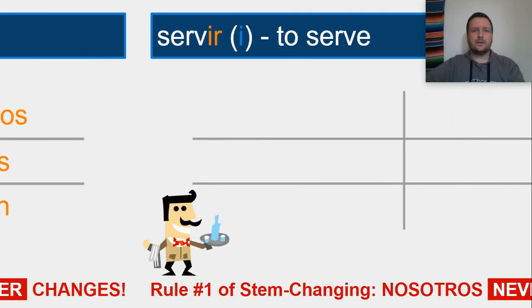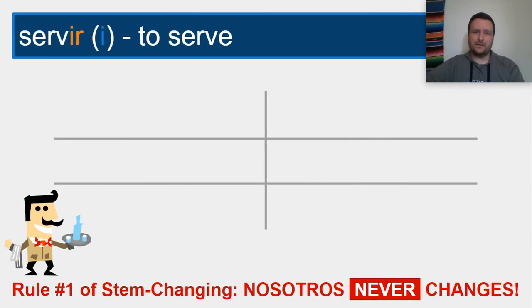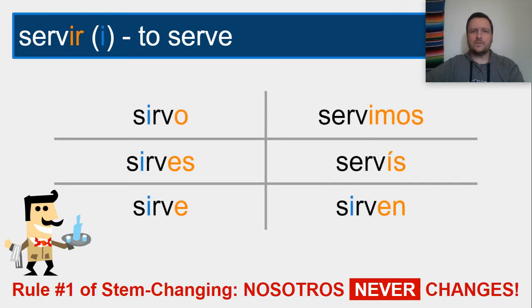Going on, let's try the verb servir, 'to serve.' The forms of servir are: sirvo, sirves, sirve, servimos, servís, sirven. You'll see that I-changers are pretty much the same. Just remember: NOSOTROS never changes. We take the last vowel in the stem and we change it.